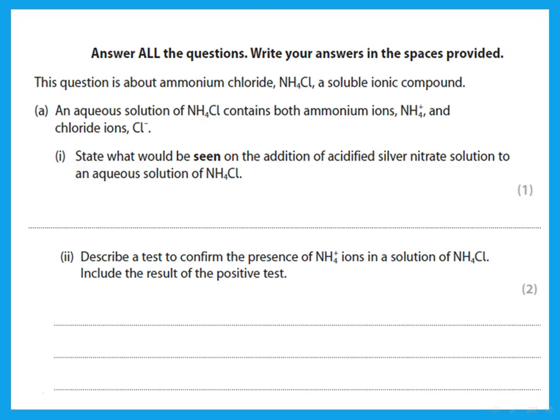Answer all questions, write your answers in the spaces provided. This question is about ammonium chloride, a soluble ionic compound. An aqueous solution of ammonium chloride contains both ammonium ions and chloride ions. State what would be seen on the addition of acidified silver nitrate solution to an aqueous solution of ammonium chloride. Remember: when asked what would be seen or what is the observation, you write what you see, not the name of something that is formed.